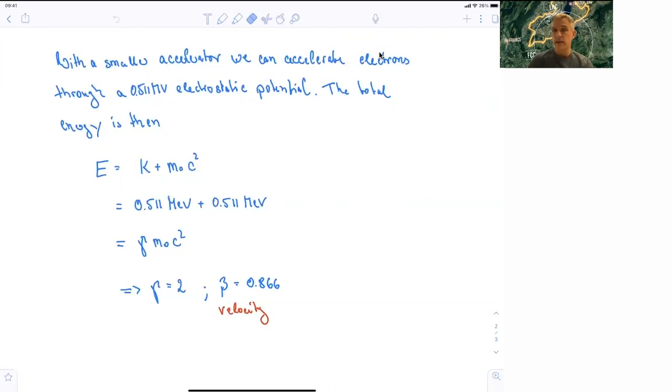So even in this smaller electrostatic potential of 500 kilovolts, we find that electrons are moving with very high velocities, with velocities very close to the speed of light.